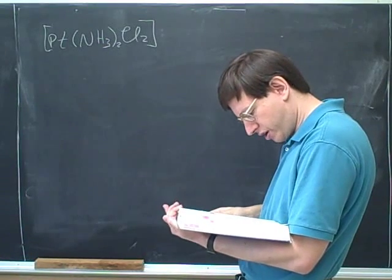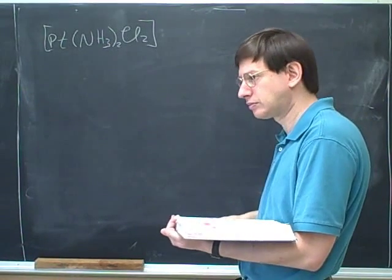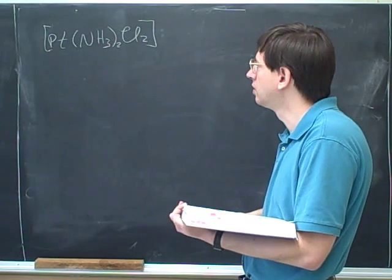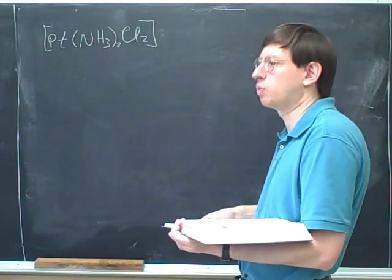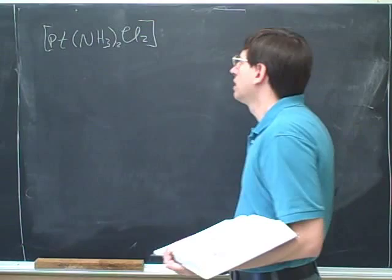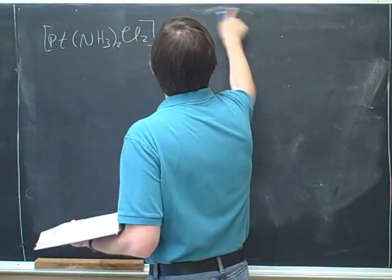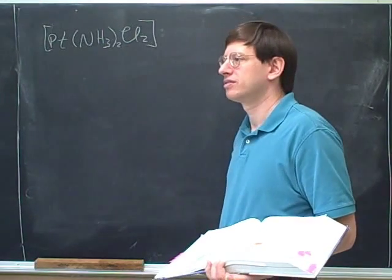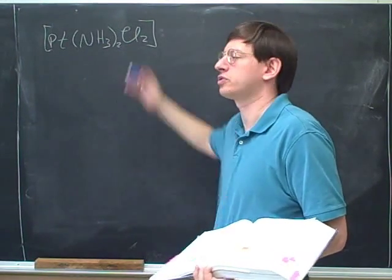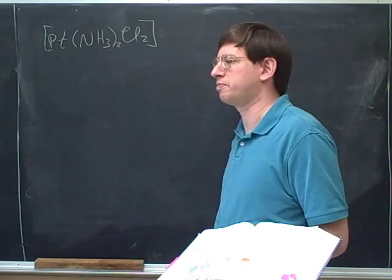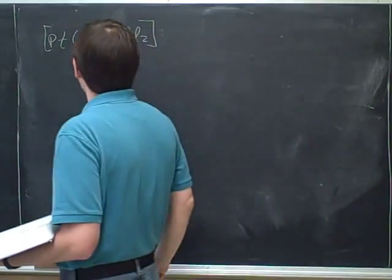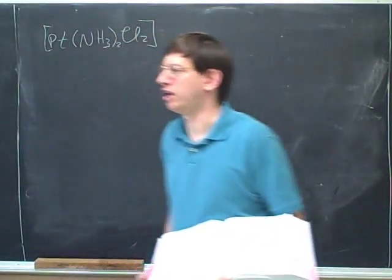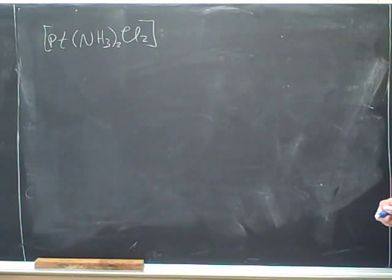What is the coordination number here? Four? Yeah, coordination number of four. So what are the possible geometries? Tetrahedral or square planar. That's right. And now I will tell you that it's square planar. So this is going to be square planar. So let's try drawing what this would look like if it's square planar.